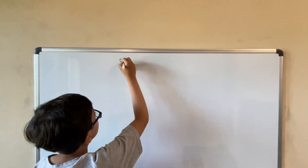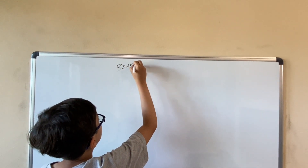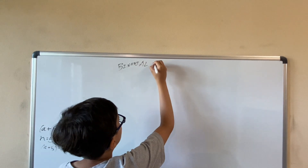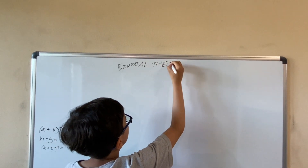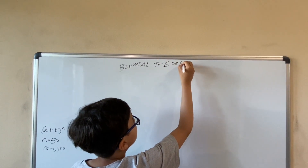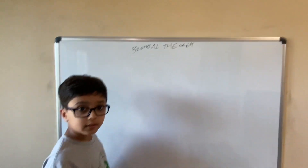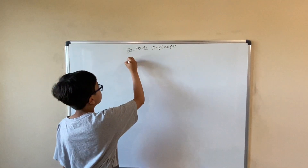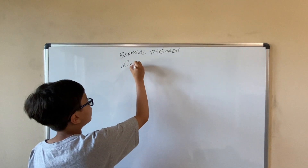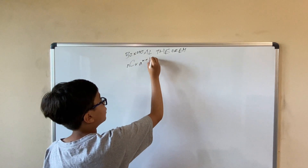Binomial theorem. I will explain the formula later. Basically, it's n C r, a to the power n minus r, b to the power r.